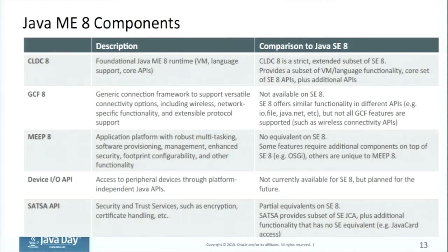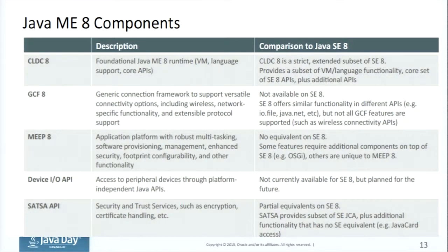Going back to the jacket example — I started with ME because I needed all the connectivity, then I migrated to SE because I needed the UI. What happened with connectivity if we don't have the Device IO in SE? Right now it's not available there. What I used was called JPY4Java — a library that provides all the connectivity to devices. It's an external API, very well written. You can still use external libraries for connectivity, but just be aware it's not yet part of the standard platform.